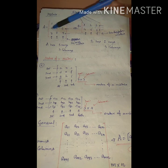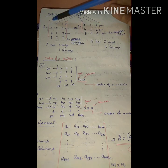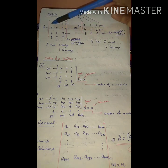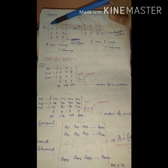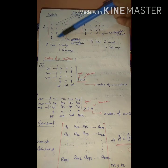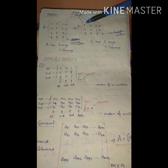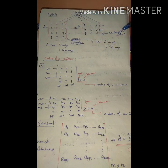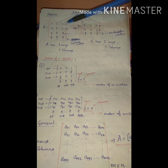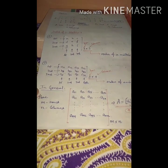In a matrix, the numbers or constants we write — and they may also be alphabets or other symbols — are individually known as elements. In the 3×3 matrix, there are 9 elements. In the 2×3 matrix, there are 6 elements. A matrix can be a square matrix or a rectangular matrix, and the numbers within it are individually called elements.